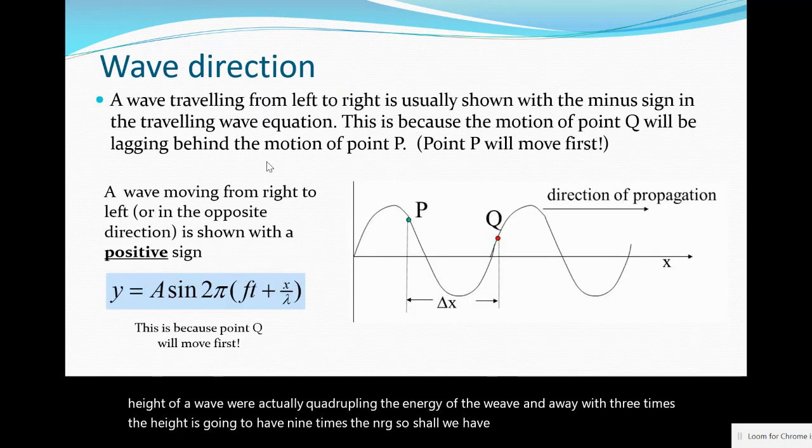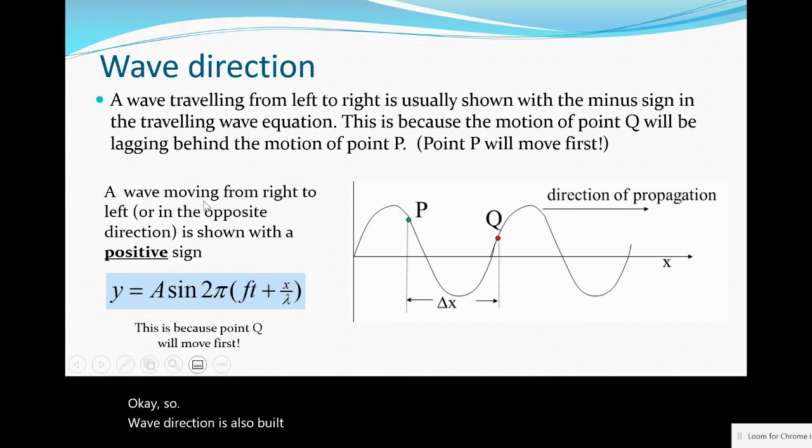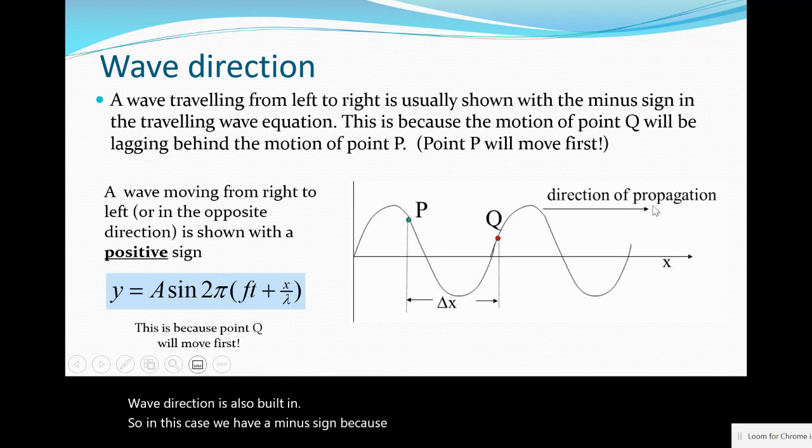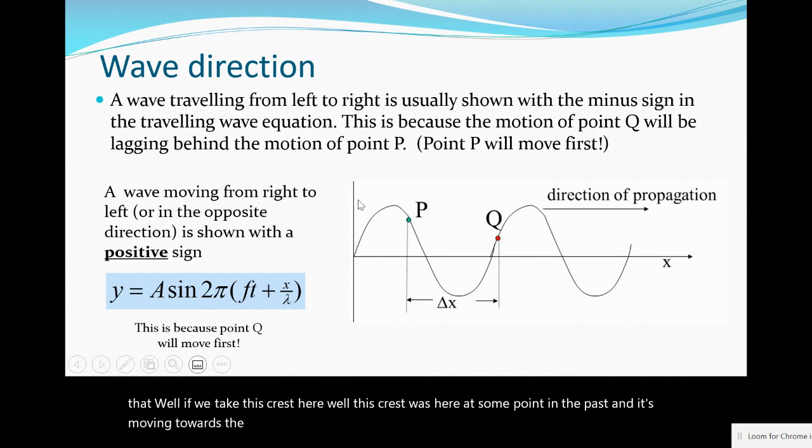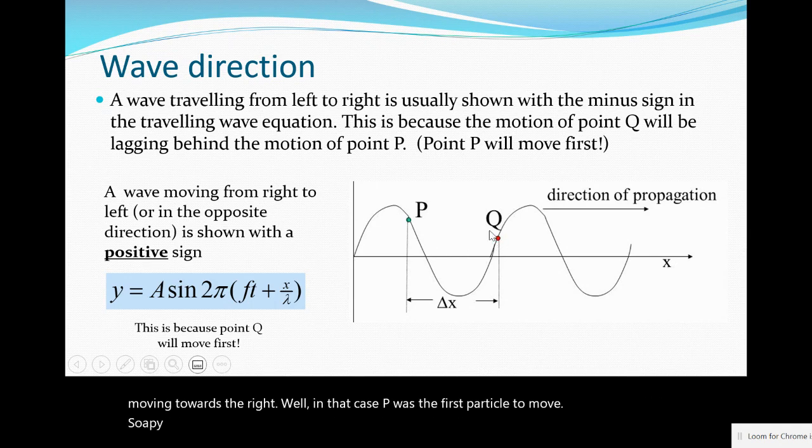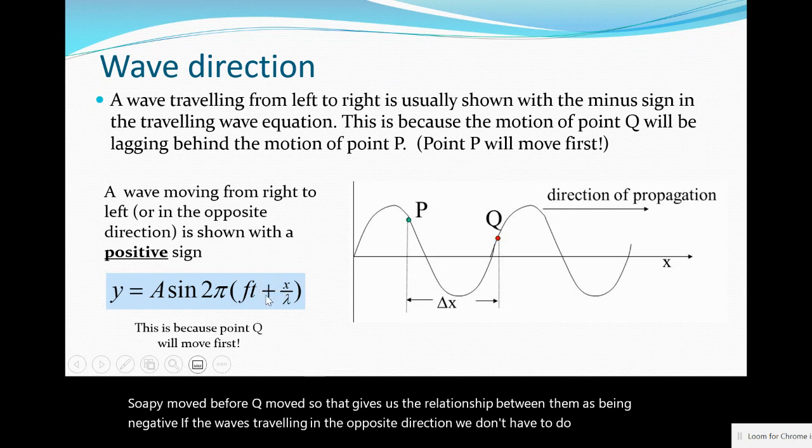Wave direction is also built in. In this case we have a minus sign because the wave is moving from left to right. If we take this crest here, it was here at some point in the past and it's moving towards the right. In that case, p moved before q moved, which gives us the relationship as being negative. If the wave's traveling in the opposite direction, we just change this to a plus.